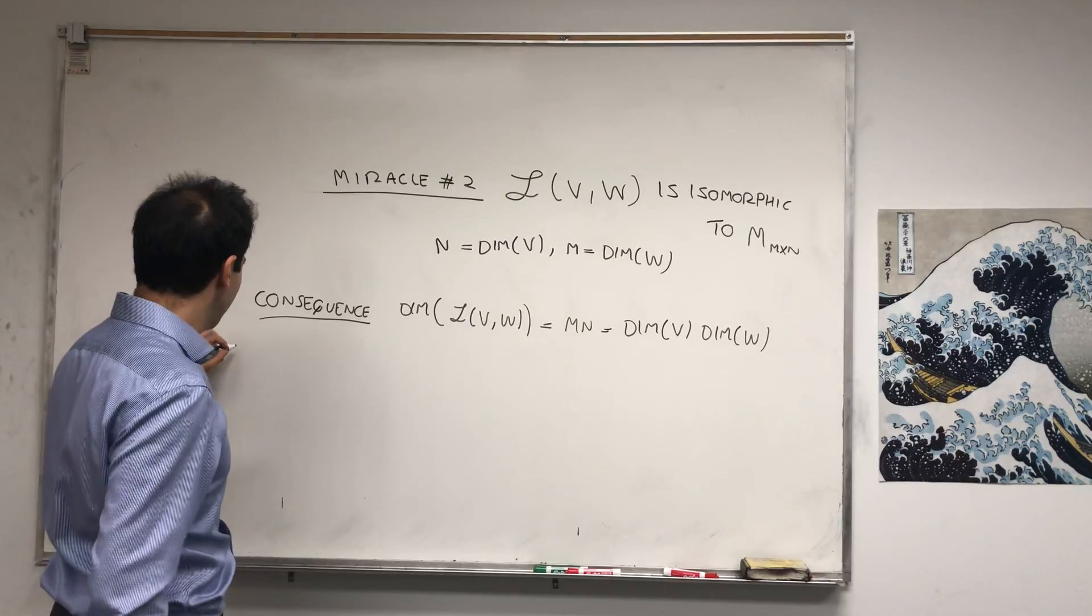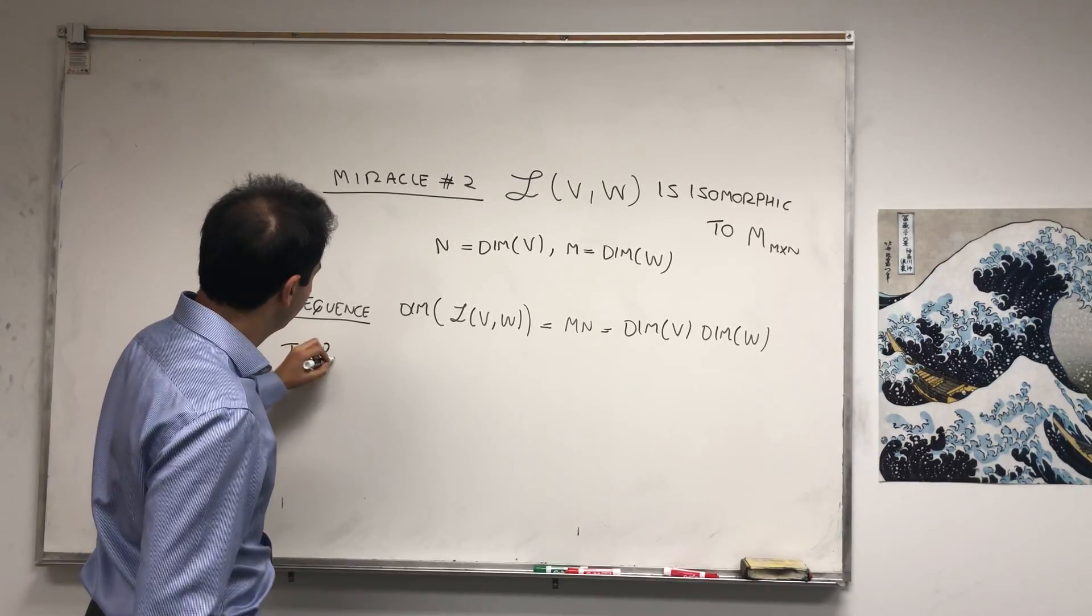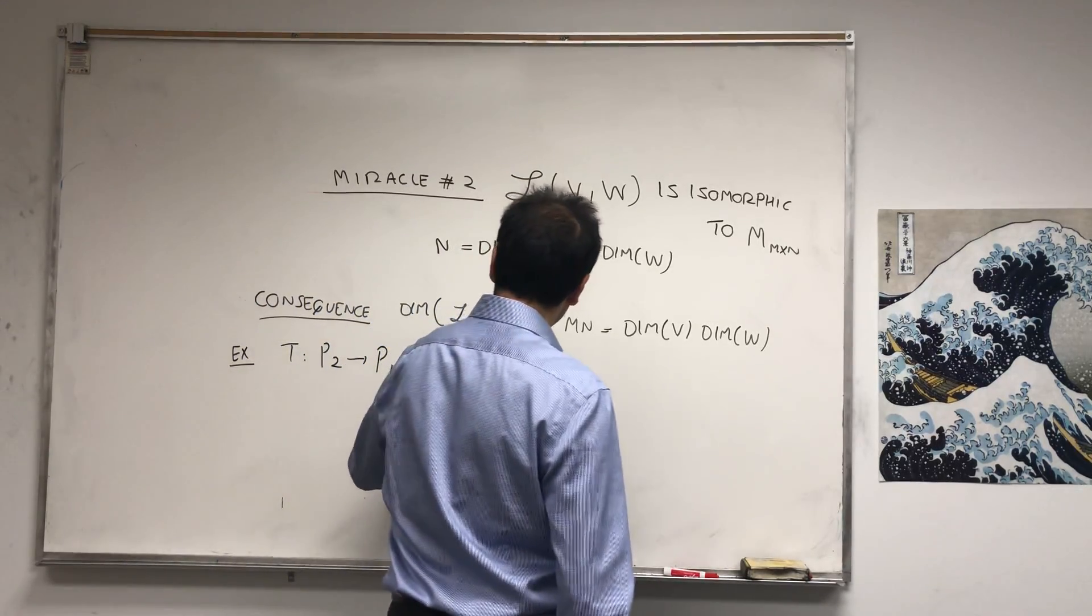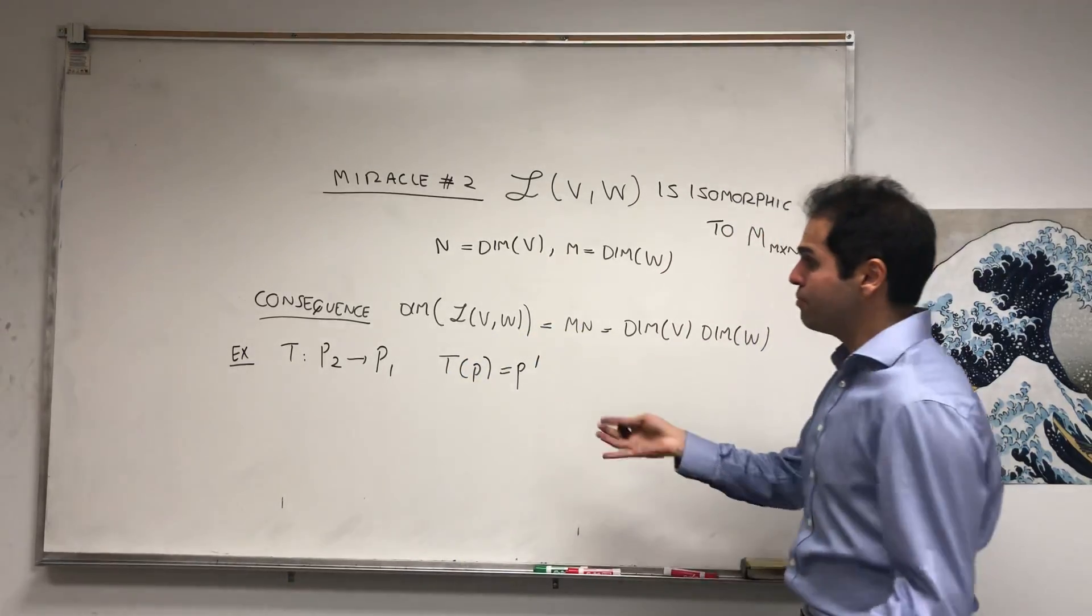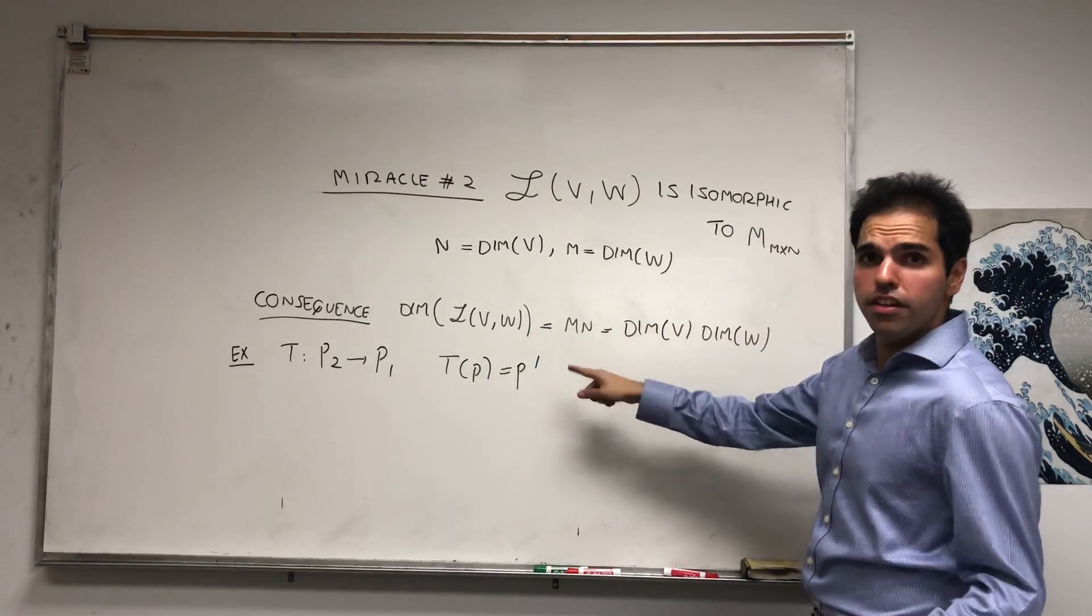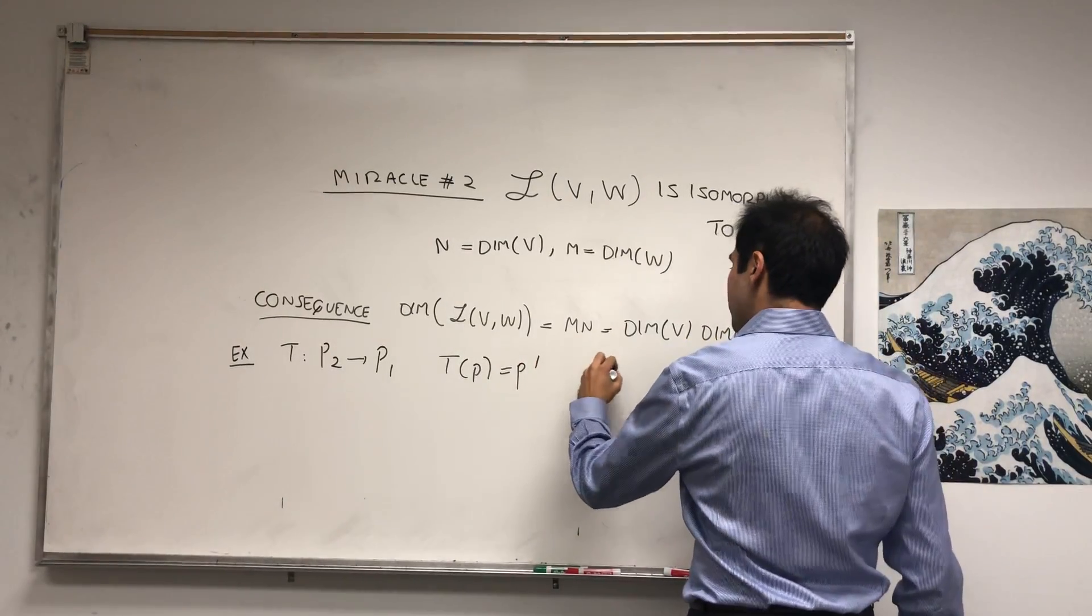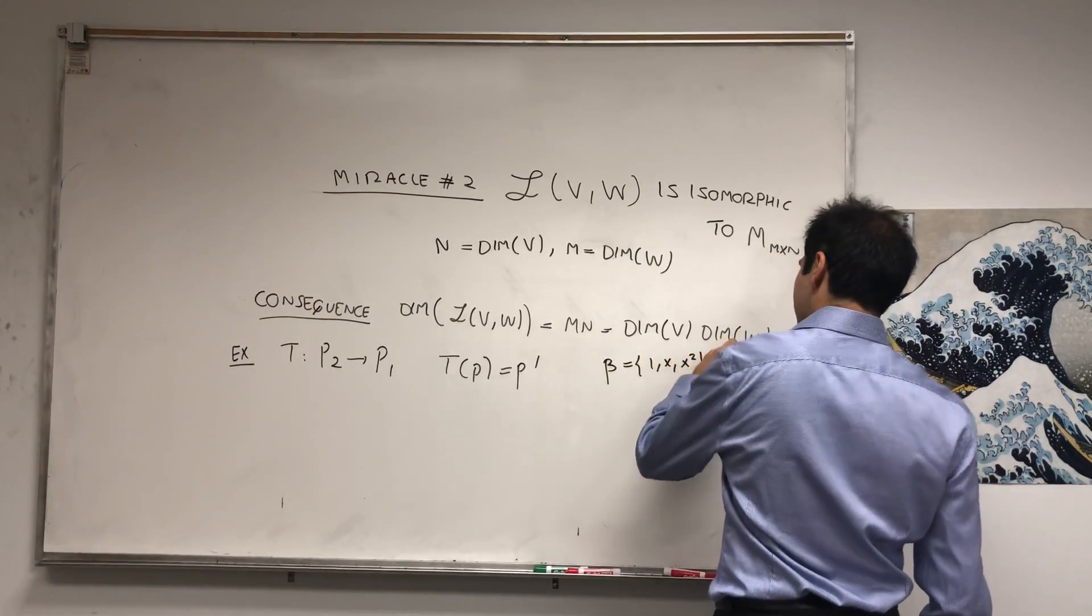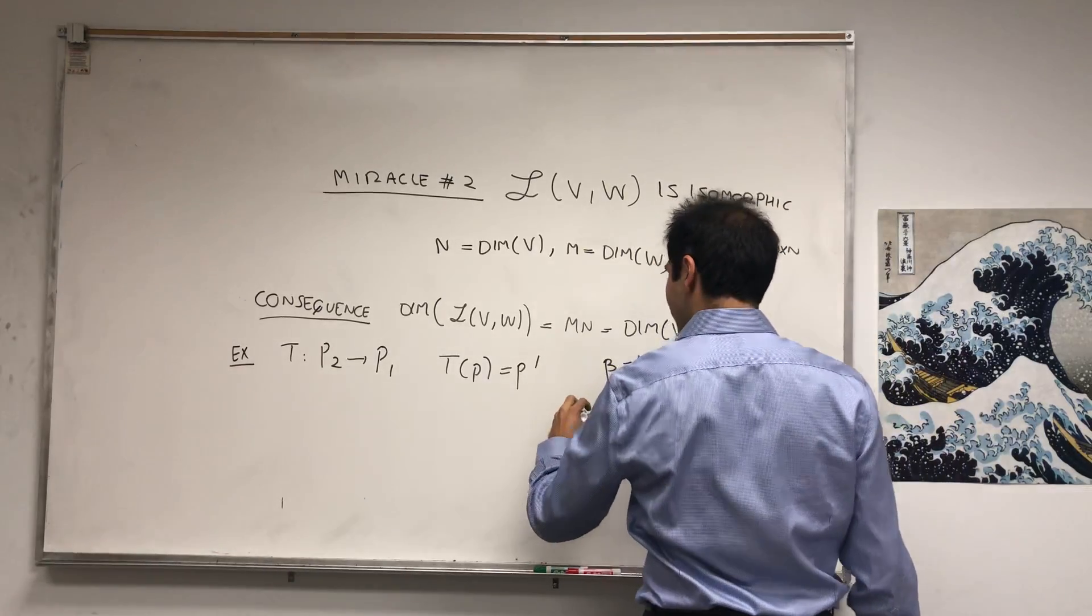And again, if you want just a quick example, if you take, let's say, T from P2 to P1, T of P is just a differentiation thing. Then I've done a video on this, I will do one. Then you can show that if you have the standard basis 1, x, x^2, and gamma to be 1, x, then the matrix of T...